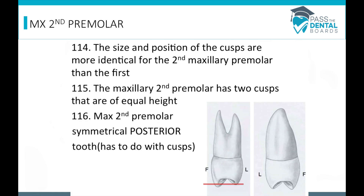Moving on to the maxillary second premolar: the size and position of the cusps are more identical for the second maxillary premolar than the first. The maxillary first premolar's buccal cusp is about one millimeter higher than the lingual cusp, while on the second premolar they're about even. The maxillary second premolar has two cusps of about equal height, and is the most symmetrical posterior tooth.